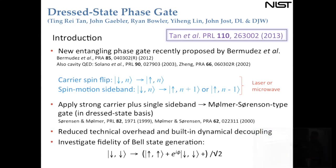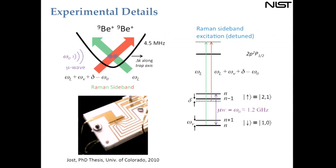For the particular experiment I'm going to describe, we investigated the scheme by measuring the fidelity of generating a particular Bell state. This work has now been published in PRL. In the experimental scheme, we have two beryllium ions trapped in a microfabricated linear Paul trap. We can apply carrier transitions using microwaves or lasers.